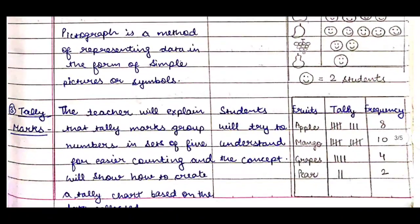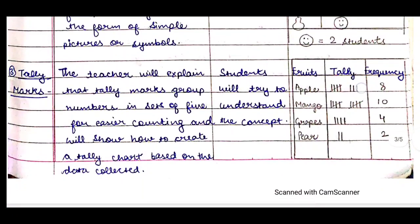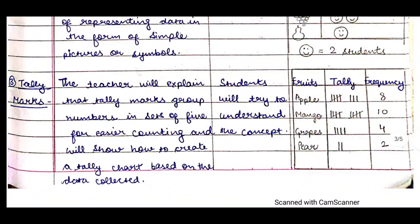The next subject matter is tally marks. The teacher will explain that tally marks group numbers in sets of five for easier counting, and will show how to create a tally chart based on the collected data. We will create the same fruit-preference data using tally marks, and students will try to understand the concept by making this type of table.